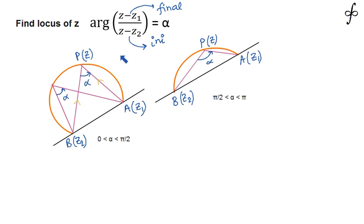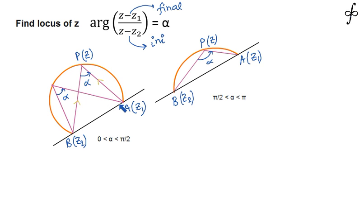When alpha is an acute angle and for every point on a path the angle alpha is constant, then according to the geometrical property of a circle, the locus of P is going to be the major arc of a circle with AB as a chord. So the line joining A and B acts as a chord and P lies on the major arc.